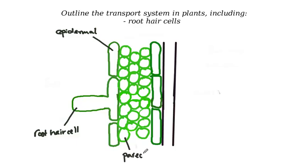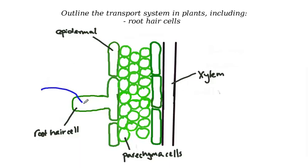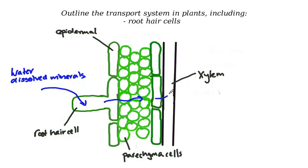These cells are called parenchyma, and on the other side this long tube-like structure is our xylem, which we'll look at further on in this presentation. In terms of the function of the root hair cells, it is to draw in water and dissolved minerals — which are inorganic materials — from the soil into the root hair cell, across the parenchyma and into the xylem tissue. Water and dissolved minerals move into the root hair cells and end up in the xylem tissue where it's drawn up into the leaves.